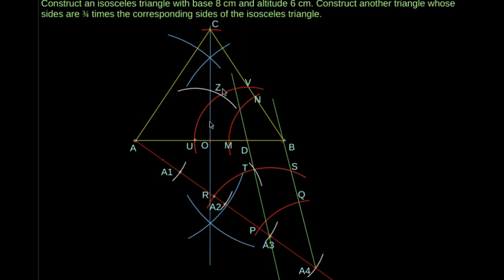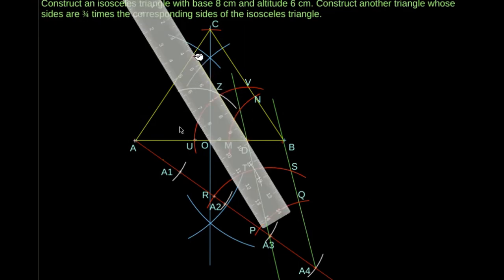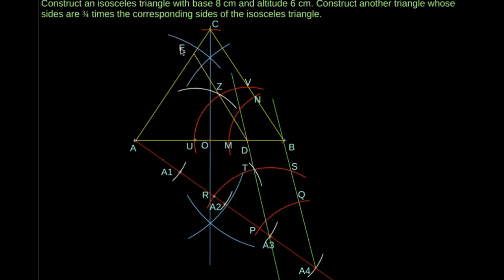Now, draw a line segment DE. Here, angle D is equal to angle B. Therefore, DE is parallel to BC.